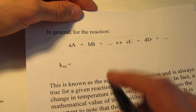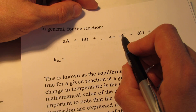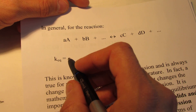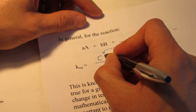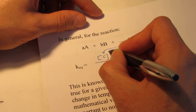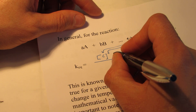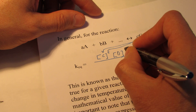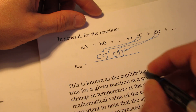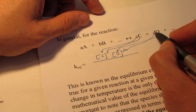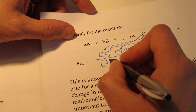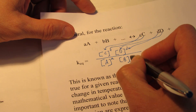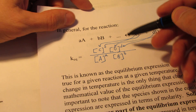In general, for a reaction where A molecules of A and B molecules of B turn into C molecules of C and D molecules of D, we can write what's called an equilibrium expression. That equilibrium expression would be the concentration of my product raised to the coefficient as an exponent, times my other product — big D — raised to its coefficient. So products go on top, and the coefficients in the balanced equation become the exponents in the equilibrium expression. My reactants end up on the bottom: A to the lowercase-a power and B to the lowercase-b power. So we have a ratio of products to reactants.